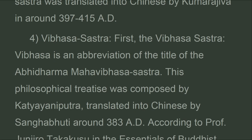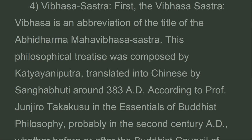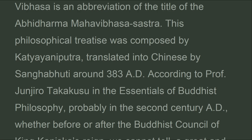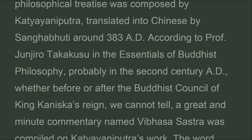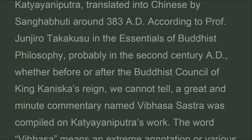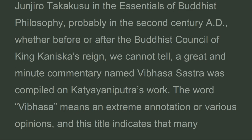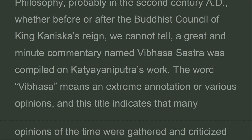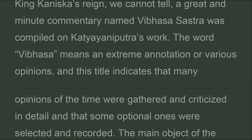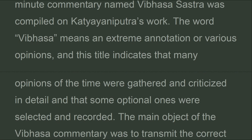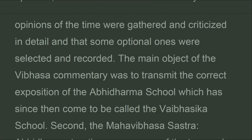Fourth, the Vibhasa Sastra. 'Vibhasa' is an abbreviation of the title of the Abhidharma Mahavibhasa Sastra. This philosophical treatise was composed by Katyayaniputra, translated into Chinese by Sanghabuti around 383 A.D. According to Professor Junjiro Takakusu in 'The Essentials of Buddhist Philosophy,' it was probably composed in the second century A.D. A great and minute commentary named Vibhasa Sastra was compiled on Katyayaniputra's work. The word 'vibhasa' means an extreme annotation or various opinions, indicating that many opinions of the time were gathered, criticized in detail, and selected opinions recorded.